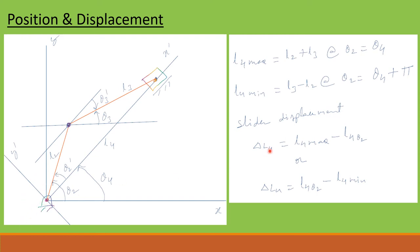For slider displacement, if you want to consider the furthermost slider position as zero, then slider displacement can be written as L4 max minus L4(theta 2), where L4(theta 2) is the position of the slider at any given crank angle theta 2. Similarly, if you want to consider the nearest slider position as zero, then displacement can be written as delta L4 equal to L4(theta 2) minus L4 minimum.